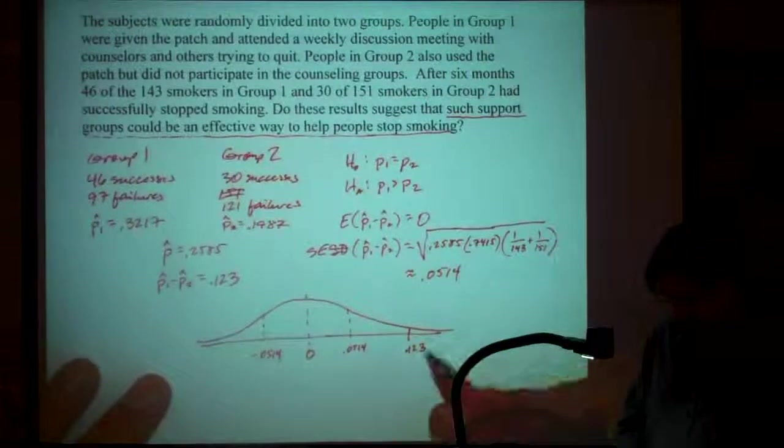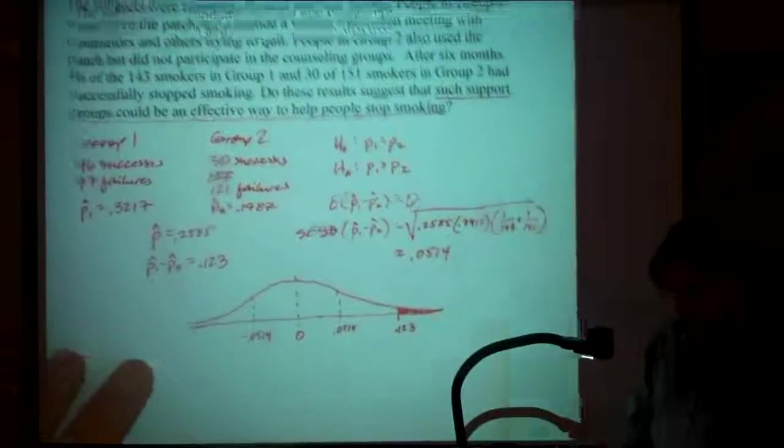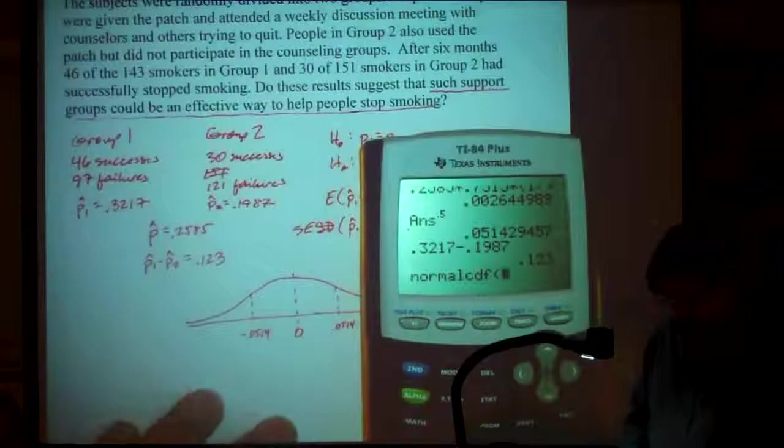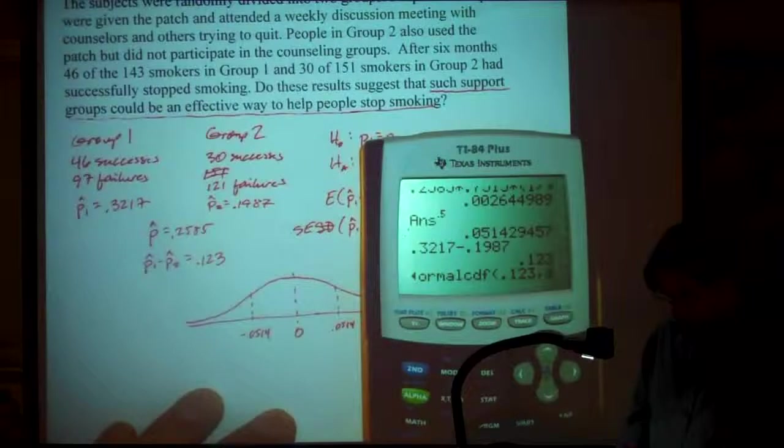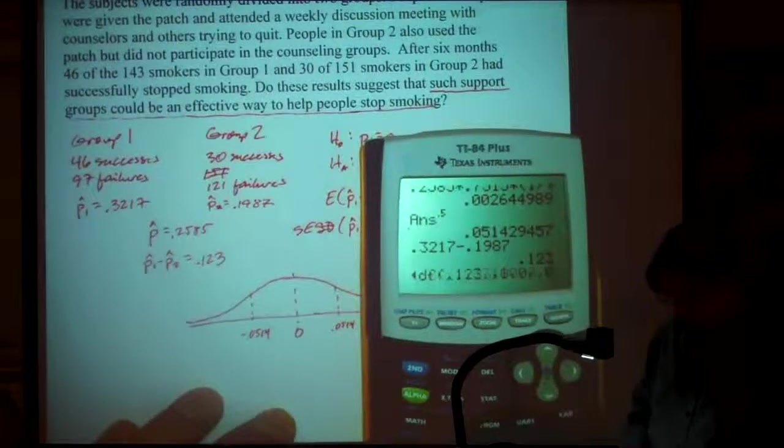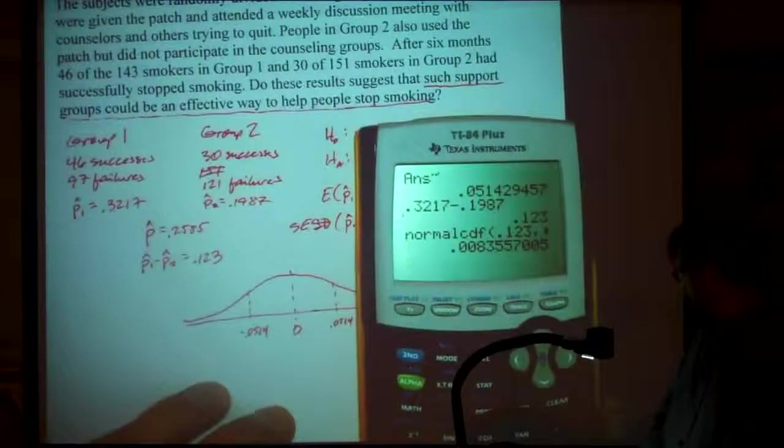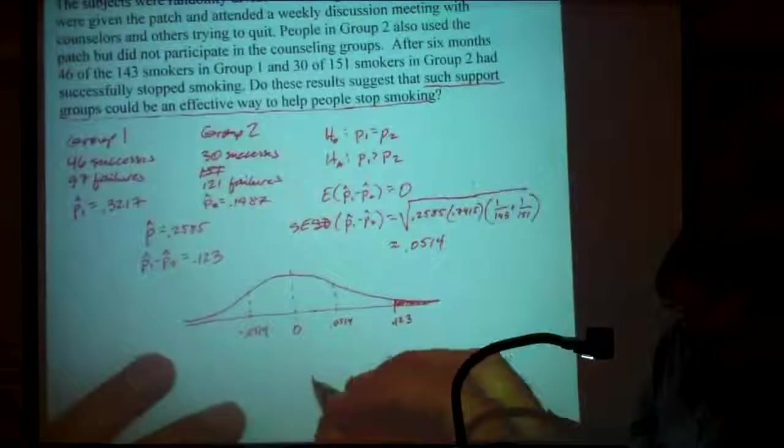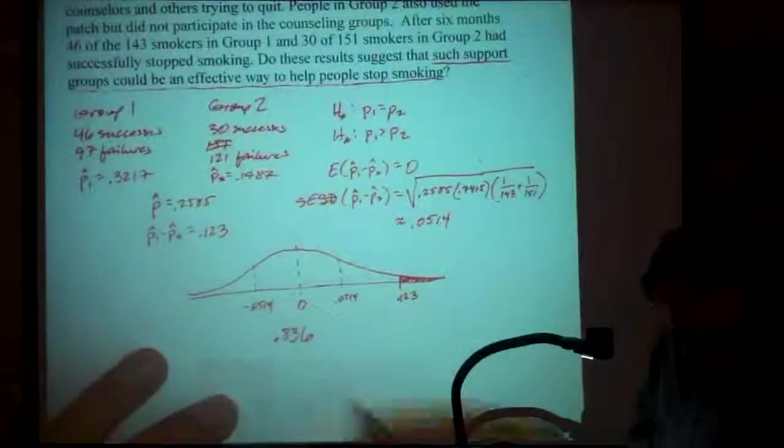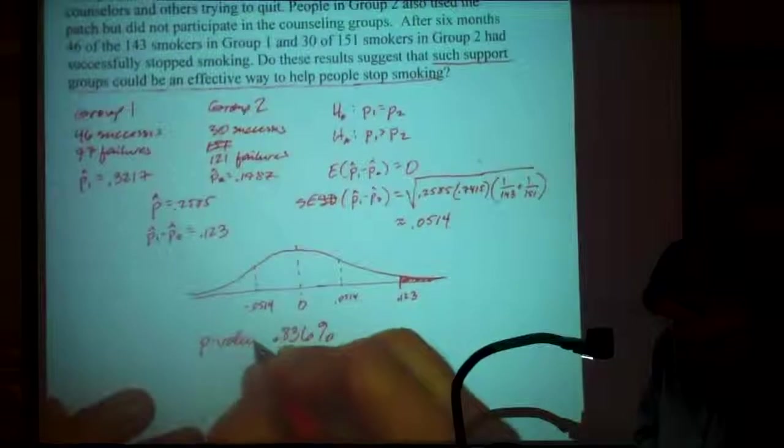So what is the likelihood that I would get something this far out or further out? Well, let's see. Again, I resort to my calculator. I'm gonna check out the normal CDF. I'm gonna say, what's the likelihood of my getting something from .123 out to, I don't know, 10 or something huge like that, given that my mean is zero and my standard deviation is .0514. And that tells me that the probability is .00835. So the probability of this happening is about .836 percent. Less than 1%. That's the probability of getting something this extreme. And of course, we call this the p-value.